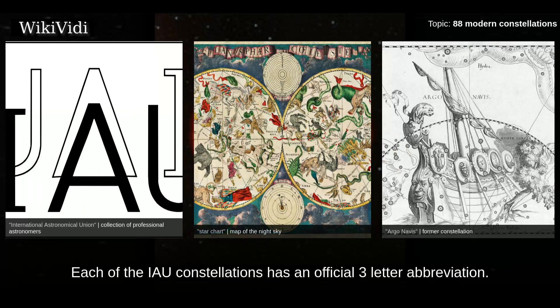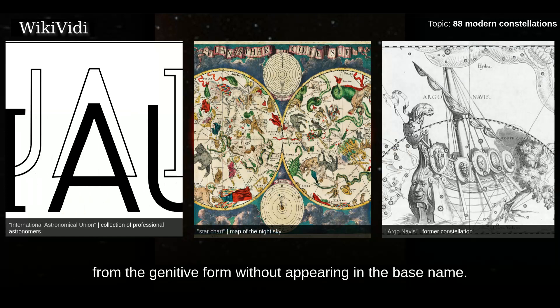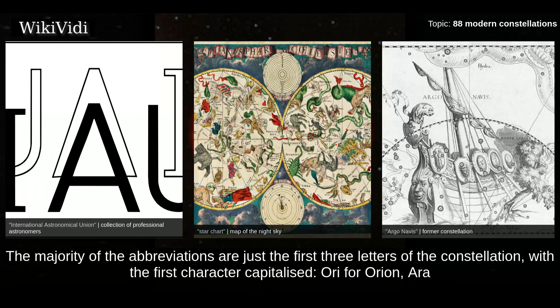Each of the 88 constellations has an official three-letter abbreviation. They are actually abbreviations of the genitive form of the constellation names, so some letters appearing in the abbreviation may come from the genitive form without appearing in the base name. The majority of the abbreviations are just the first three letters of the constellation, with the first character capitalized — for example, Ari for Aries, Ara for Ara.